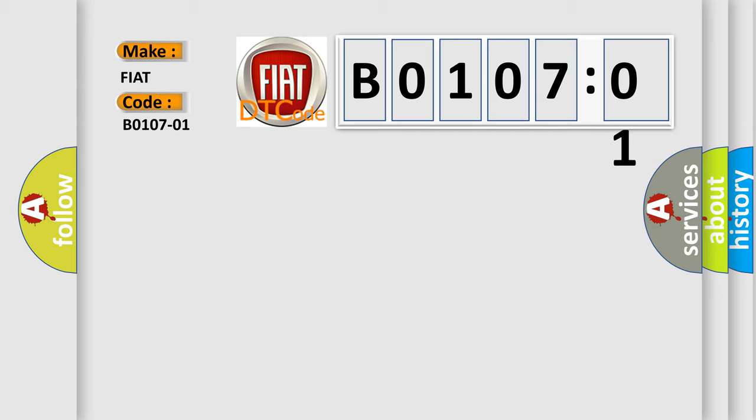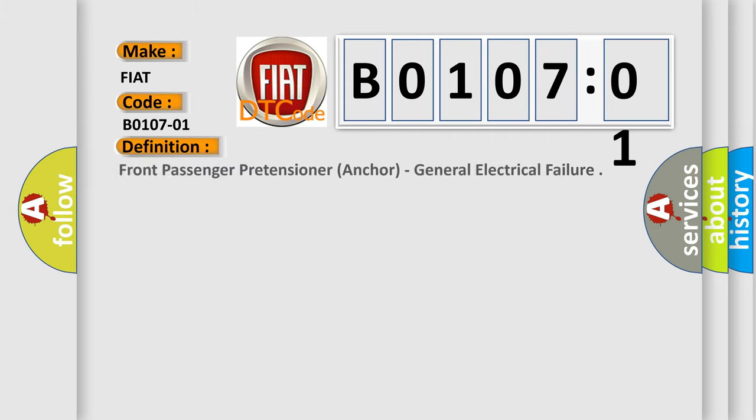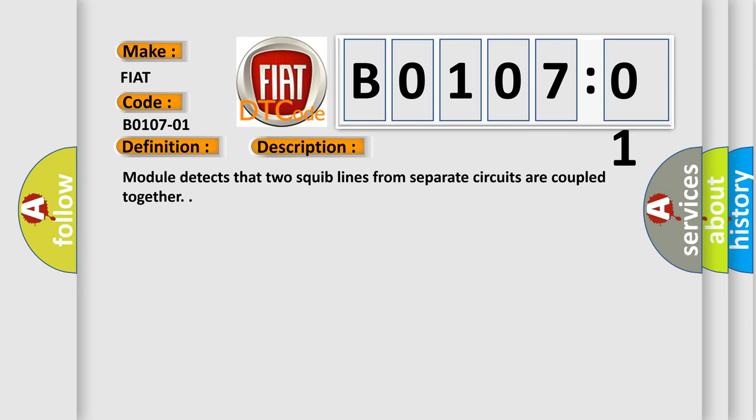The basic definition is Front passenger pretensioner anchor, general electrical failure. And now this is a short description of this DTC code. Module detects that two squib lines from separate circuits are coupled together.